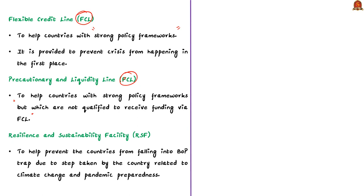Finally, there is the Resilience and Sustainability Facility or RSF. It provides affordable long-term financing to countries undertaking reforms to reduce risks to prospective balance of payment stability, including those related to climate change, pandemic preparedness, etc. These are all the various lending instruments of the IMF.